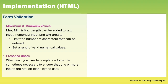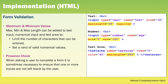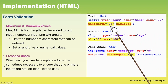When we are creating our forms we can add in form validation. Form validation, like validation with databases, tries to ensure that the data is more accurate. We can add maximum and minimum values — max, min and max length — which can be added to text input, numerical input and text areas to limit the number of characters that can be entered or to set a range of valid numerical values. Looking at the text box here on screen we have a max length set to 25. Looking at the number field here, the minimum number that can be entered is zero and the maximum is 100.